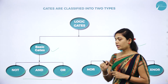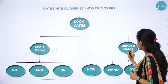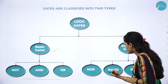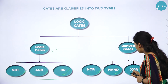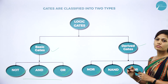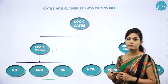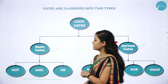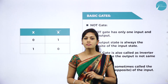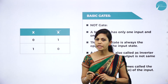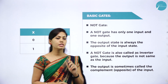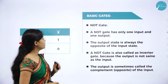We have four derived gates: NOR gate, NAND gate, XOR gate, and XNOR gate. Now let us understand about the basic gates — NOT gate, OR gate, and AND gate.